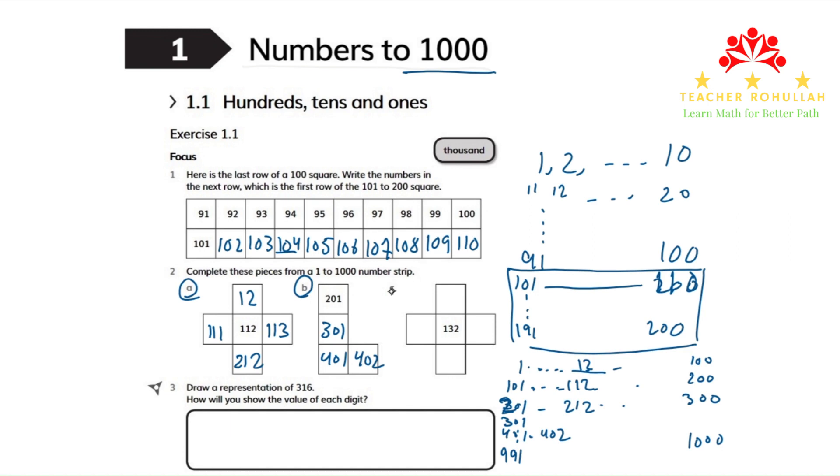In part C of this question we have 132 in the middle. If we come again to this one to one thousand strip, 132 maybe it's here. So above 132 we will have 32. Below 132 we will have 232. So the number that comes above 132 is 32. The number that comes below 132 is 232. The number to the left of 132 is 131, and to the right of it is 133.